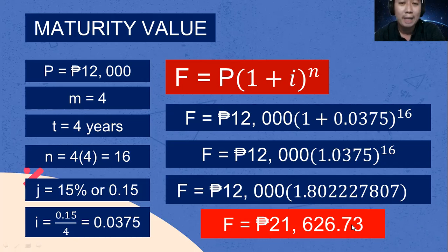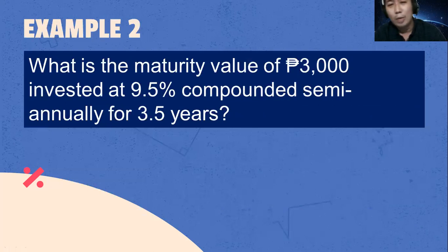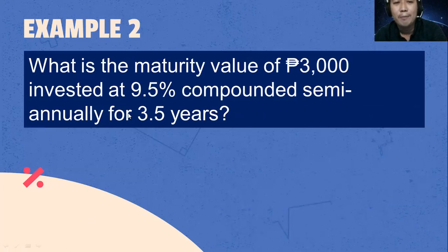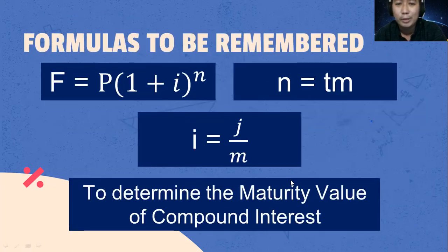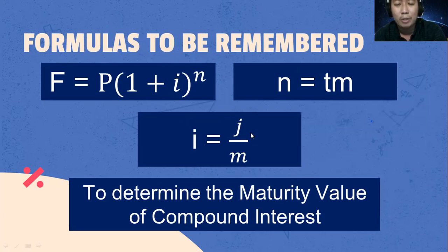I hope you were able to follow our simple processes. Let's have another example. What is the maturity value of 3,000 pesos invested at 9.5% compounded semi-annually for 3.5 years? These are the formulas to be used. F is equal to the principal amount P multiplied by the quantity of 1 plus i raised to n, where i equals J over M, and n equals time multiplied by M.